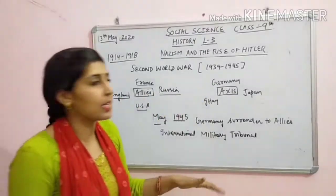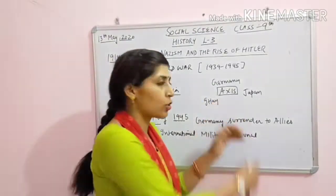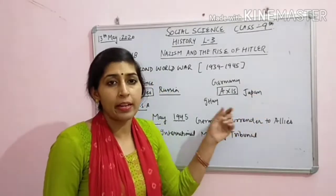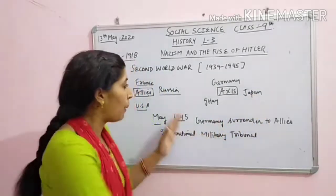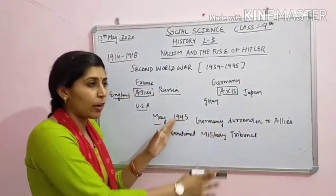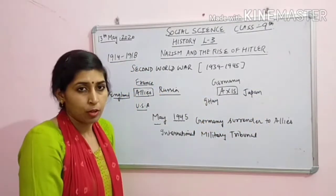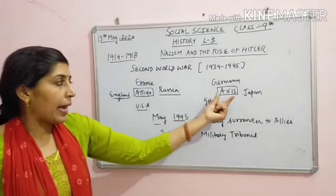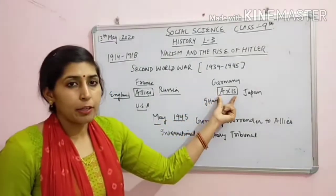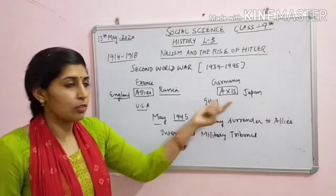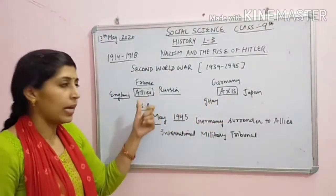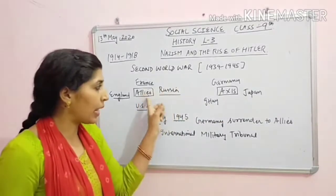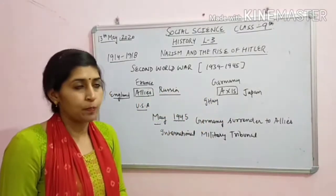And the second one is the axis group. Axis mein kaun aate hain? Germany, Japan and Italy. Ab jo world war ho raha hai, woh in ke beech mein ho raha hai. Axis power, due to some reasons, haar jati hai. Jita kaun hai? Allied power. Toh punishment allied power dhenge axis power ko.